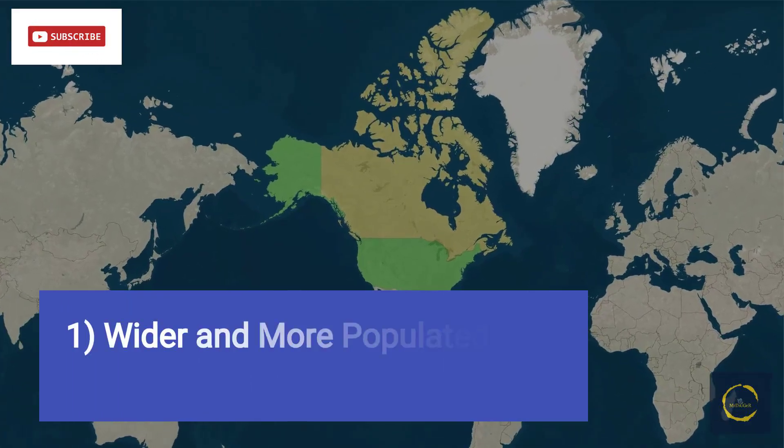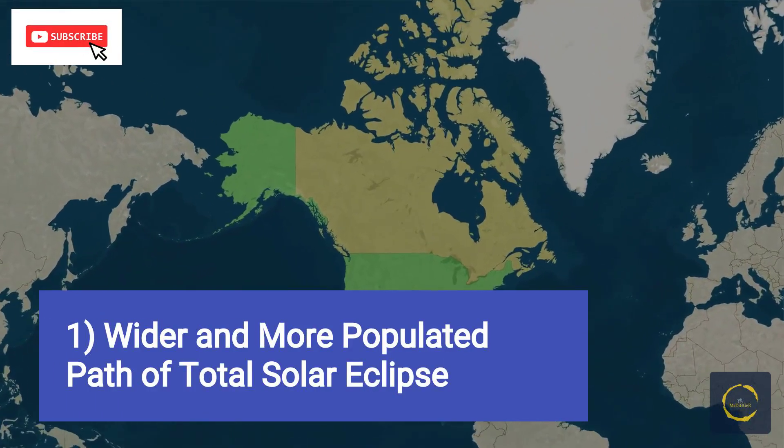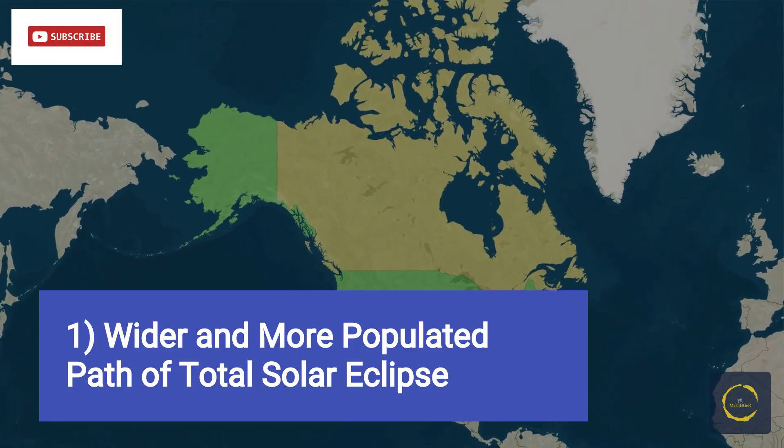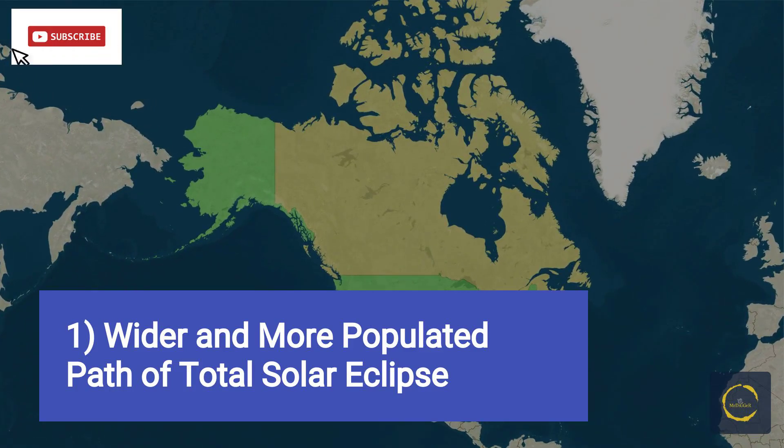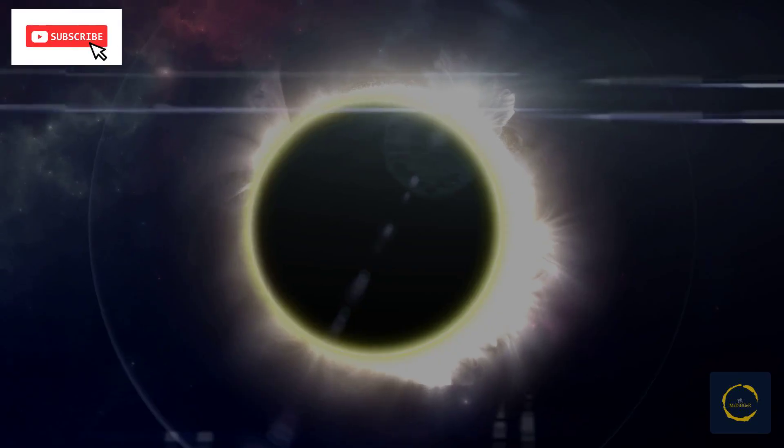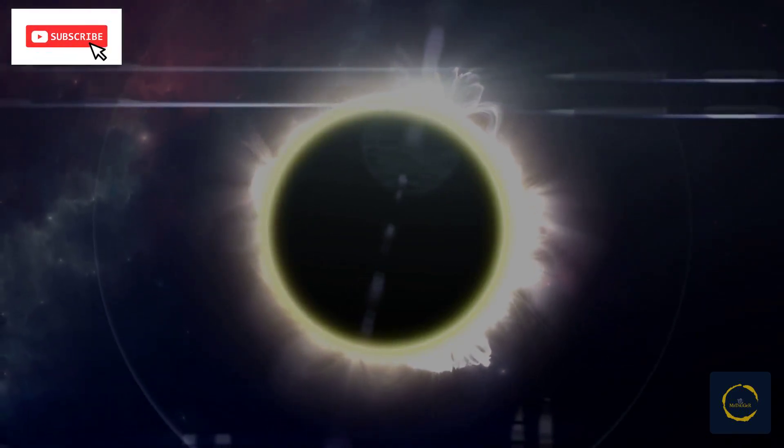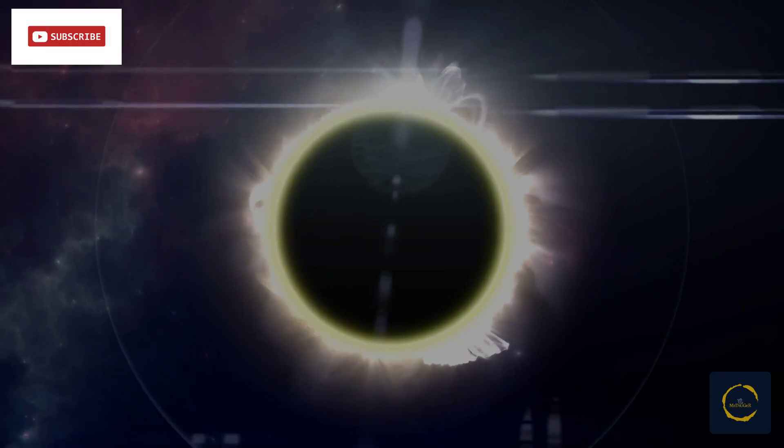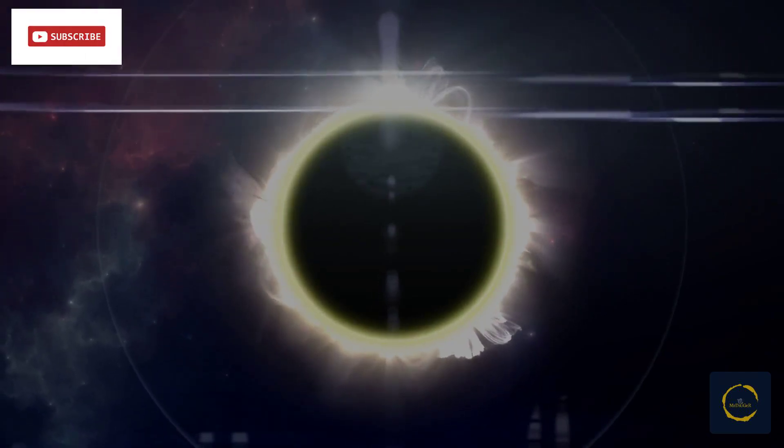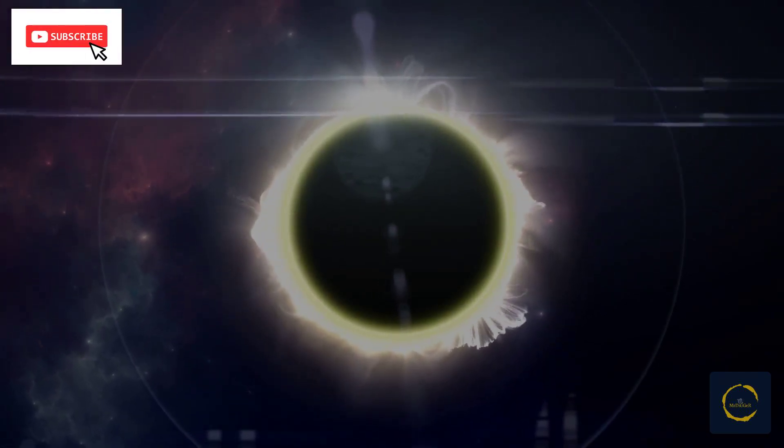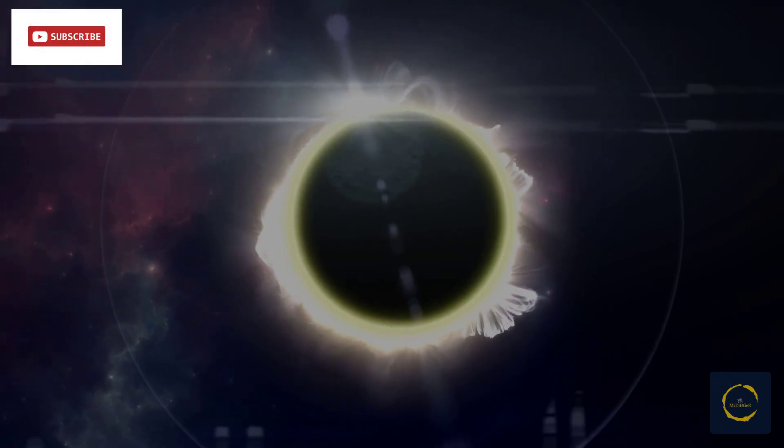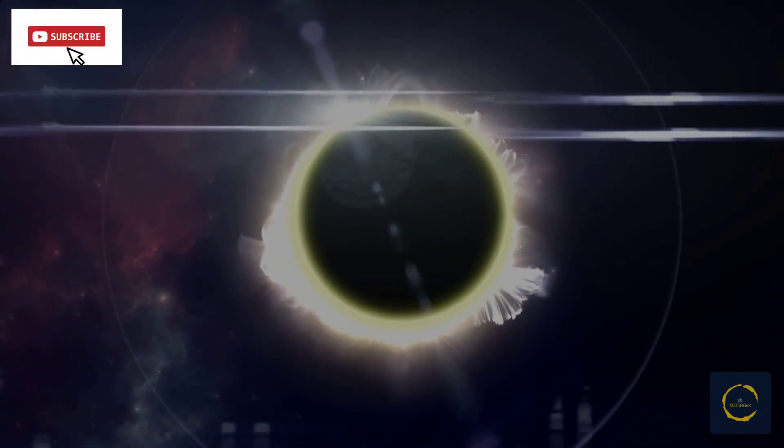Firstly, the path of total solar eclipse will be wider and it will cover more populated areas than 2017's solar eclipse. The path of totality, where viewers can see the moon totally block the sun, revealing the star's outer atmosphere, called the corona, is much wider during the upcoming total solar eclipse than it was during the eclipse in 2017.